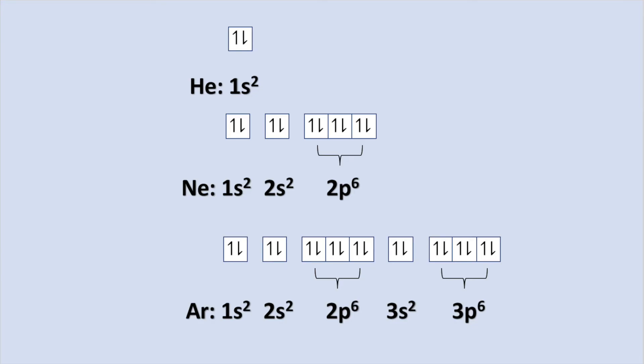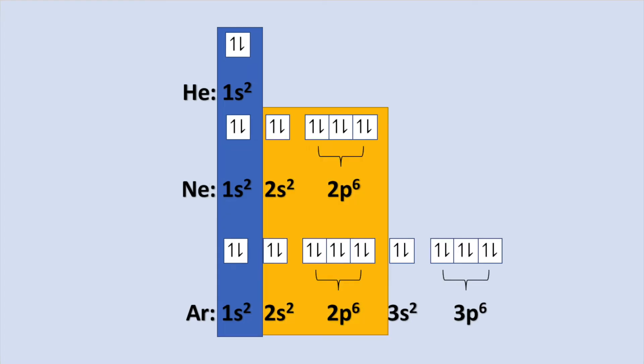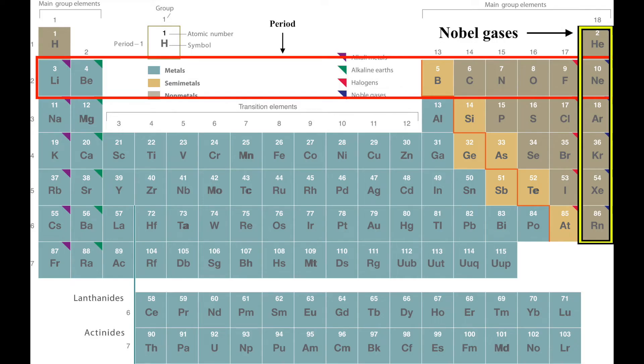I want you to look at the electron configurations for the following noble gases: helium, neon, and argon. When looking at these electron configurations, do you notice what they have in common? Hopefully you noticed that between helium, neon, and argon, they all have 1s2 in common. In addition, neon and argon have 1s2, 2s2, 2p6 in common. What we begin to notice is that at the end of a period, we reach a noble gas and we will have a completely filled energy level. Then when you move down to the next period, the core electrons will be equal to the electron configuration of the previous noble gas. As you begin to write out these configurations, you'll have a repeating portion, which are your core electrons.